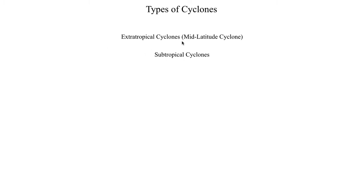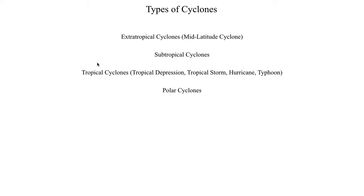We won't be covering subtropical cyclones during this class, but we will briefly talk about tropical cyclones, which are very common this time of year in the summer. By tropical cyclones, we're referring to something that's either a tropical depression, a tropical storm, a hurricane if you're off the coast of the Americas, or a typhoon if you're off the coast of Asia. Another cyclone in the atmosphere is a polar cyclone, but we won't be talking about those. There is also a special type of extratropical cyclone called a Shapiro-Keyser cyclone, which we will cover during this lecture. These are quite interesting and somewhat rare compared to a standard extratropical cyclone.